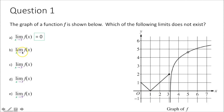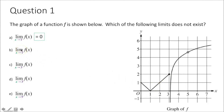For part b, we have the limit as x approaches 1 of f of x. That tests whether the limit from the left and from the right as x approaches 1 are the same. We figured out the limit from the left equals 0. The limit as x approaches 1 from the right also equals 0. Therefore, the limit as x approaches 1 of f of x equals 0.